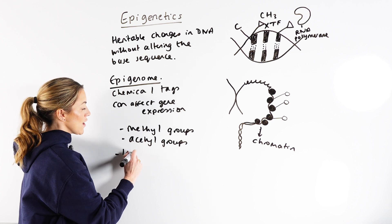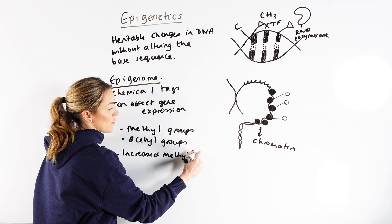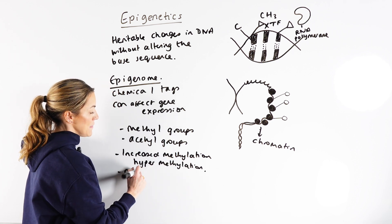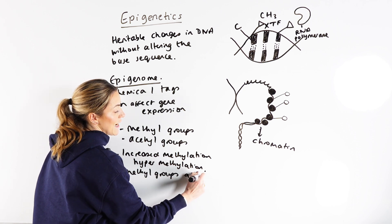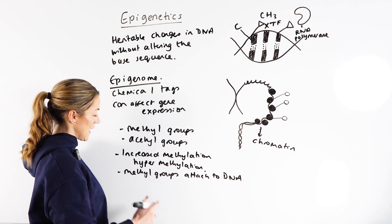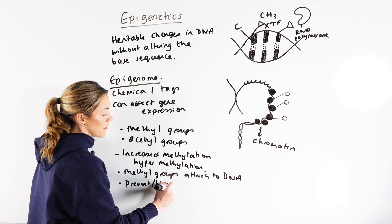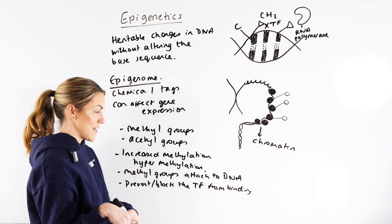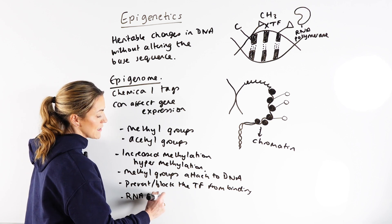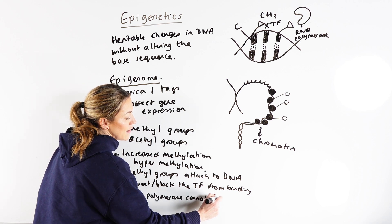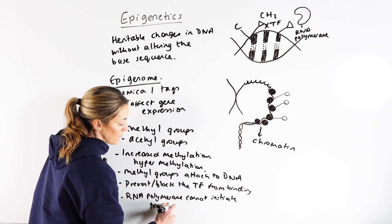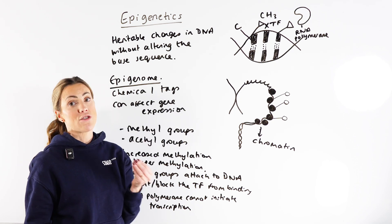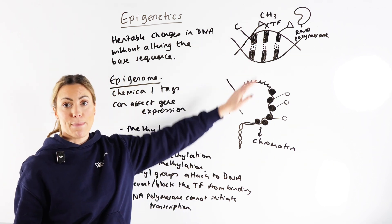So to summarise: increased methylation — or hypermethylation — means methyl groups attach to the DNA, specifically to the cytosine bases. They can prevent or block the transcription factor from binding because they're in the way. If the transcription factor can't bind, then RNA polymerase cannot initiate transcription, and gene expression is switched off. That gene will not be transcribed and translated.